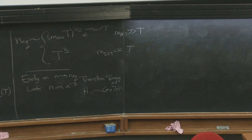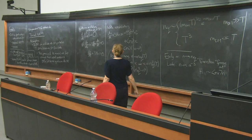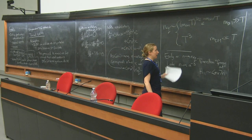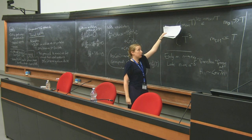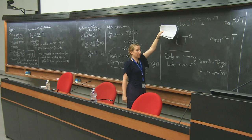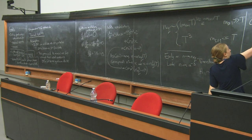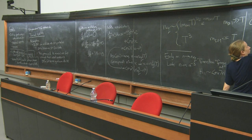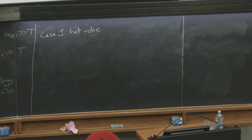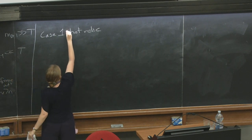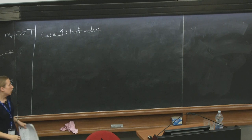There are two broad cases for when freeze-out occurs. Either the transition happens when the dark matter is still very relativistic, so its abundance looks like T cubed — this is a hot relic. Or it can happen at late times once the dark matter has become non-relativistic and is sliding down the Boltzmann tail — a cold relic. The approximate solution is that N follows its equilibrium value until the freeze-out condition is satisfied, and then it redshifts as 1 over A cubed.